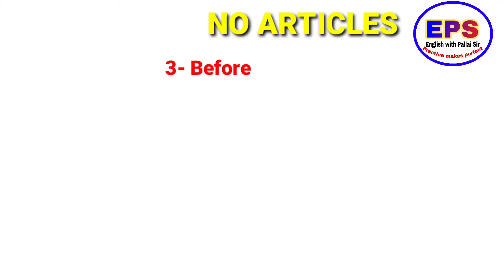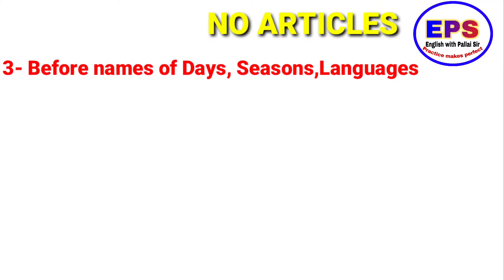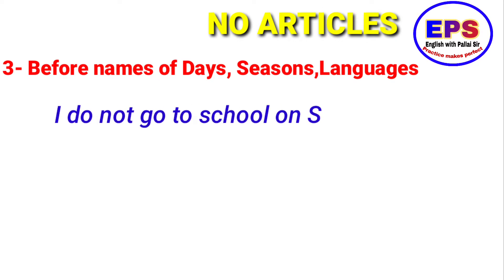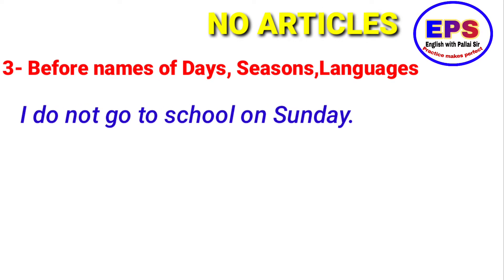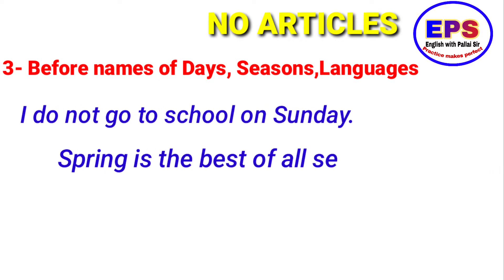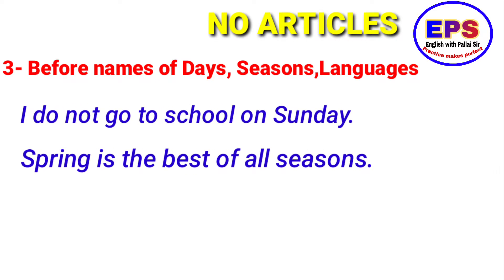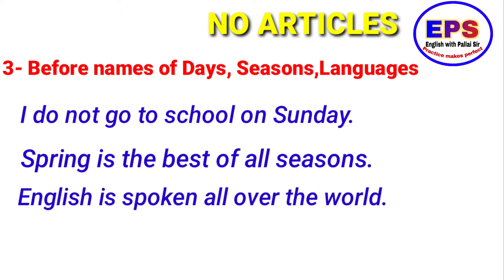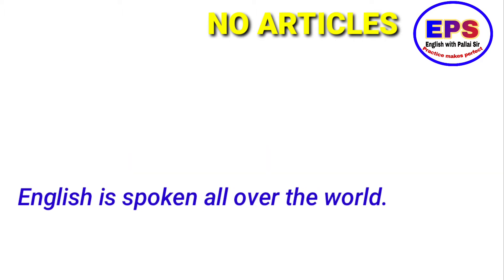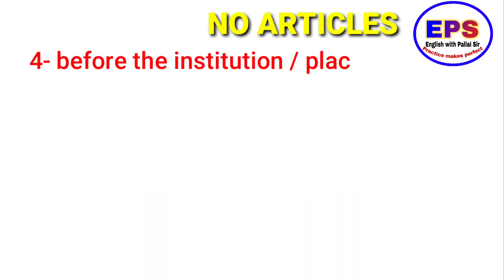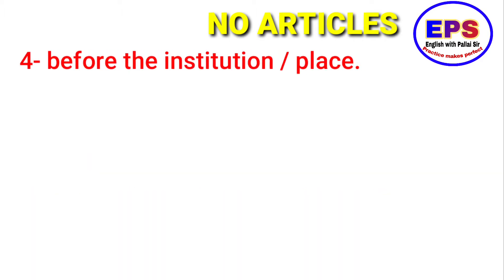No article before days of the week, seasons, and languages. For example: 'I do not go to school on Sunday.' 'Spring is the best of all seasons.' 'English is spoken all over the world.' Number four: no article before names of institutions and places like school, temple, and jail.